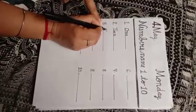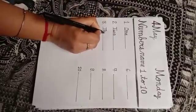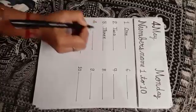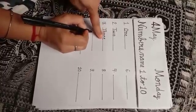Three. T, H, R, double E, three. T, H, R, double E, three.